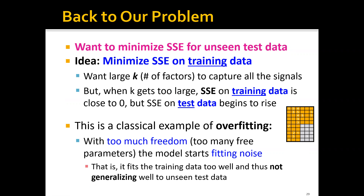Basically, with too much freedom — meaning we have too many free parameters — the model will start to fit the noise. That is, it fits the training data too well, and thus it's not generalizing well to the unseen test data.